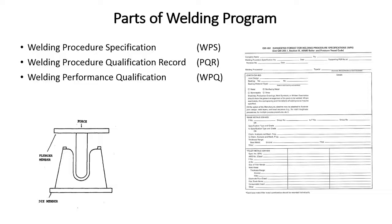Parts of a welding program — almost every welding program needs a few documents. You need welding procedure specifications (WPSs), welding procedure qualification records (PQRs) — which support the WPS — and welding performance qualification records, which are the documents that qualify your welders. That paperwork says this welder did this test and can run this filler material in this position and make a sound weld. This is the backbone of your welding program.